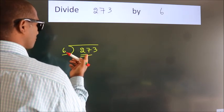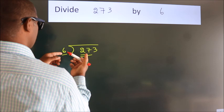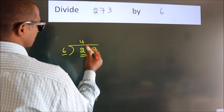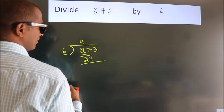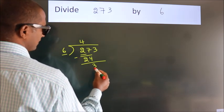A number close to 27 in the 6 table is 6 fours, which is 24. Now we should subtract. We get 3.